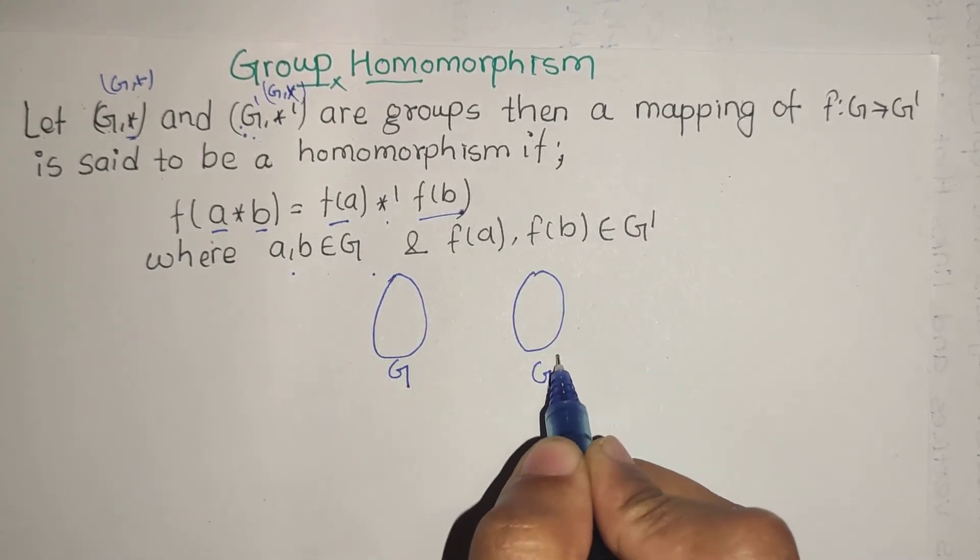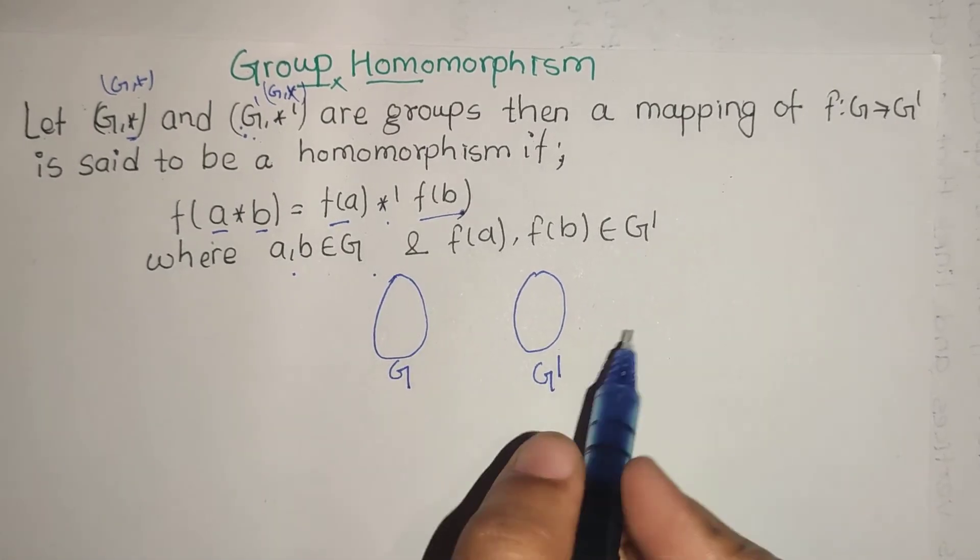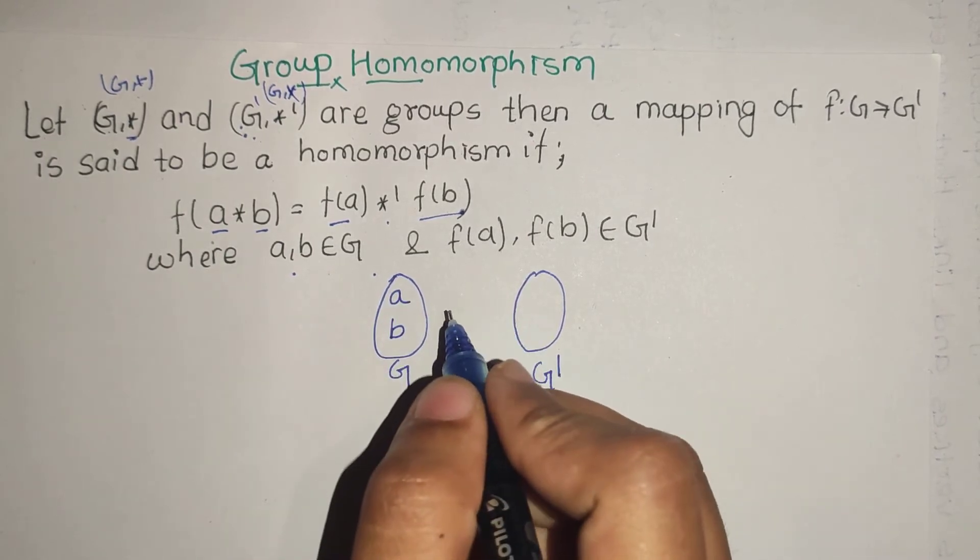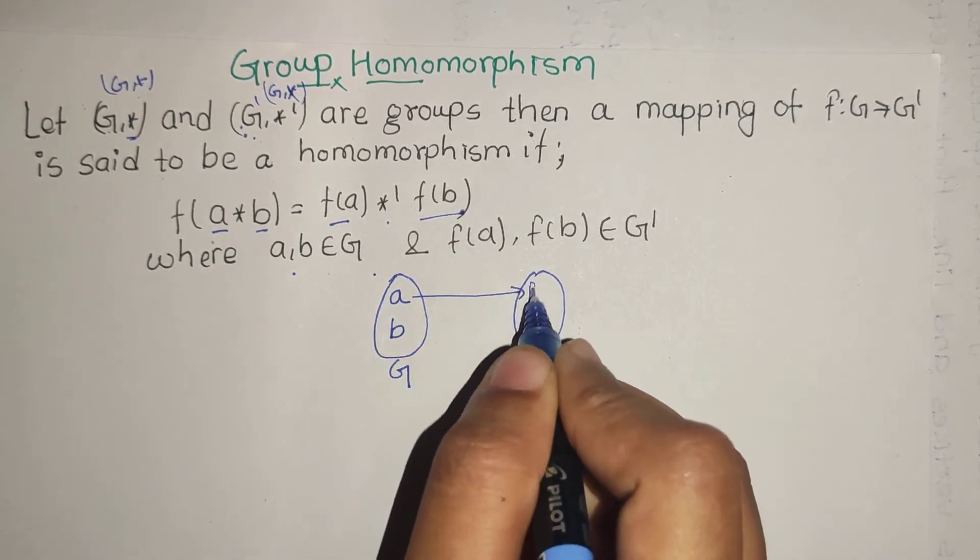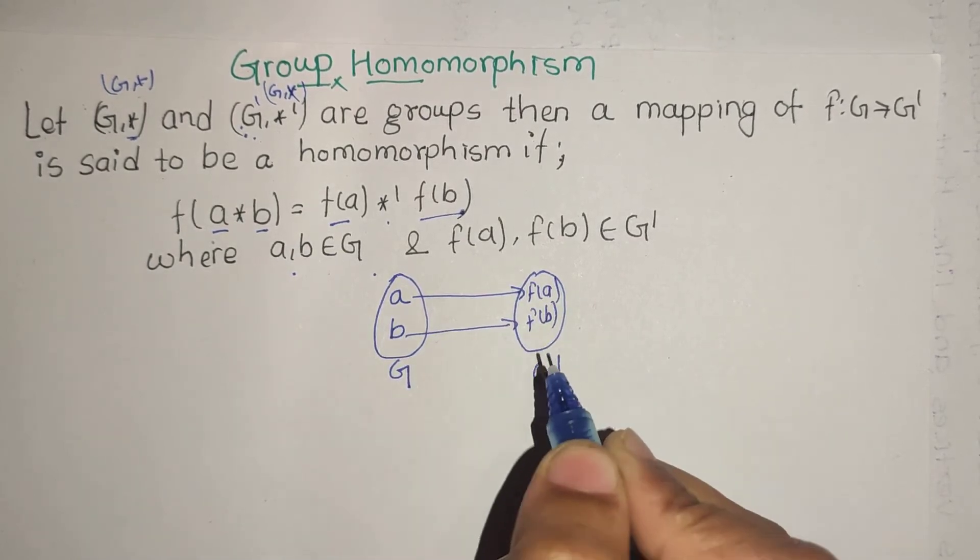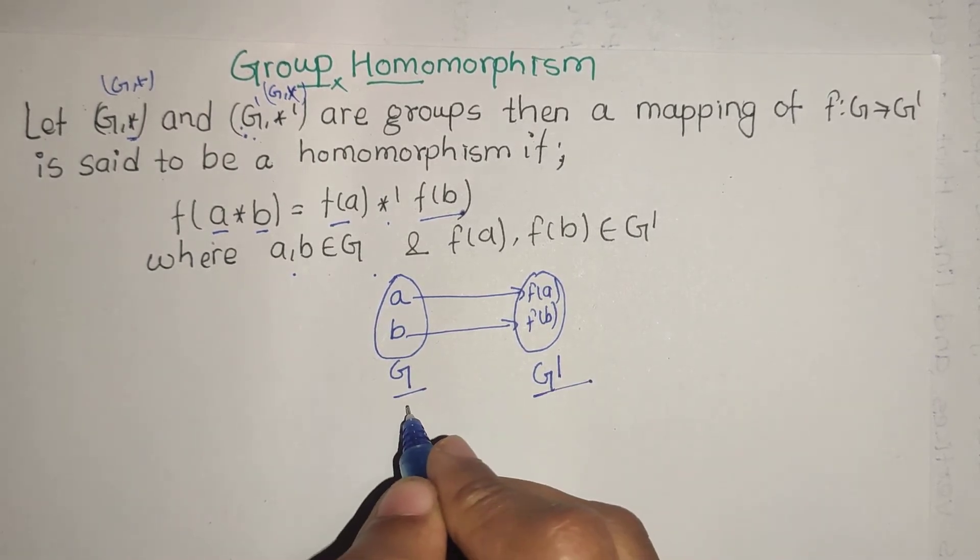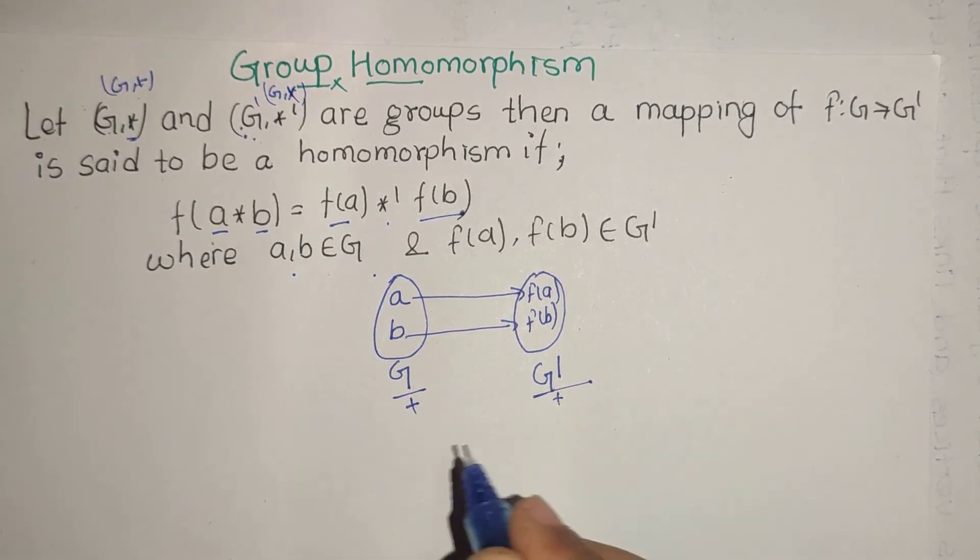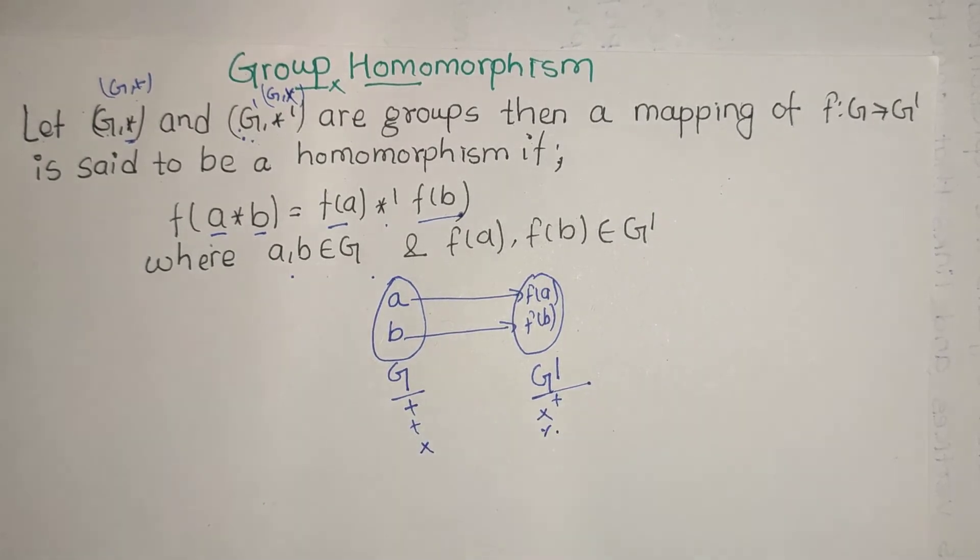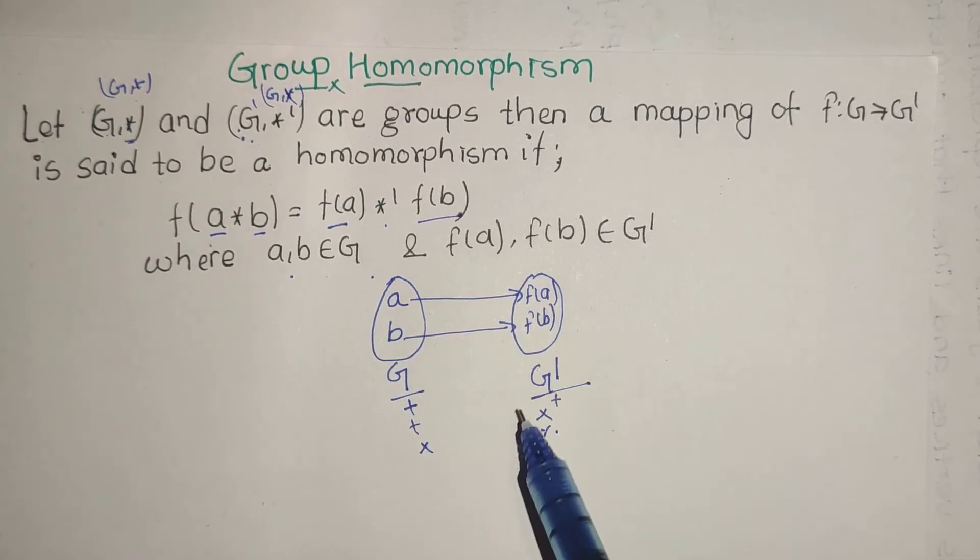Let me illustrate: here we have group G and here we have another group G'. In G we have elements like a, b. In G' we have their image elements f(a) and f(b). G has one operation and G' has another operation. The operations could be the same or different - the elements are related by the mapping f.